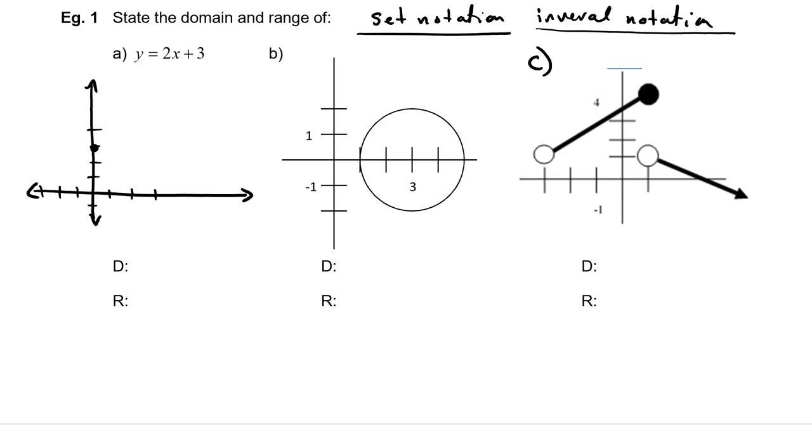I know that my y-intercept is 3. Don't forget to put my axis labels and my scale. I know that my y-intercept is 3 and my slope is 2. So up 2 over 1, down 2 over 1, and here is my line.